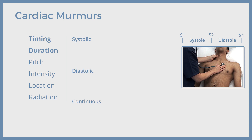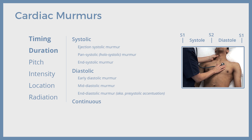Before proceeding, let's recap the main murmur types that one can encounter during physical examination. These are ejection systolic, pan-systolic, late-systolic, early-diastolic, mid-diastolic, late-diastolic, and continuous murmurs.